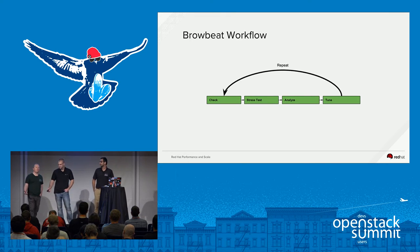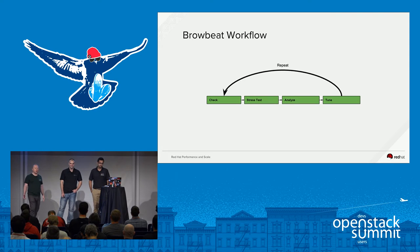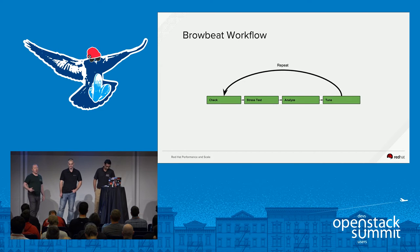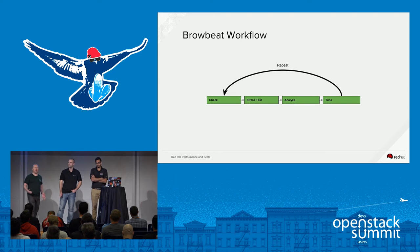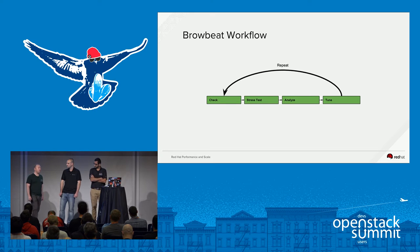So with BrowBeat, there are a lot of complex components to OpenStack. Our goal was to keep things as simple as possible and as repeatable as possible. When you look at the workflow of BrowBeat, it's very simple - there are just about four major categories, and it lets you run BrowBeat over and over until you get the results you're after. When we dive into the infrastructure tools, you'll see that everything is automated in a way that requires very minimal input and very minimal post-configuration when things get set up.